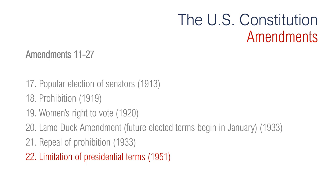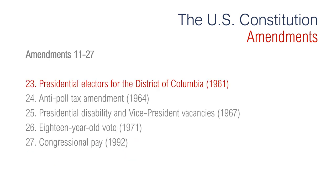The 22nd Amendment is regarding the limitation of presidential terms, passed in 1951. It says that no president may serve more than two elected terms. If a president has succeeded to the office after the halfway point of a term in which another president was originally elected, then that president may serve for more than eight years, but not to exceed 10 years. The 23rd Amendment is regarding presidential electors for the District of Columbia, passed in 1961. It says that citizens living in the District of Columbia have the right to vote in elections for president and vice president. The District of Columbia has three presidential electors, whereas before this amendment it had none.